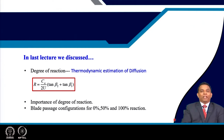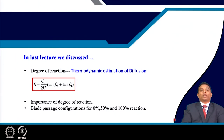The equation for degree of reaction is U divided by C_A, multiplied by the bracket (tan β₂ + tan β₁). This correlates axial velocity, peripheral speed, and blade angles. You can realize the importance of these parameters in design.